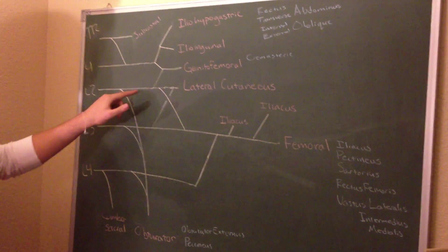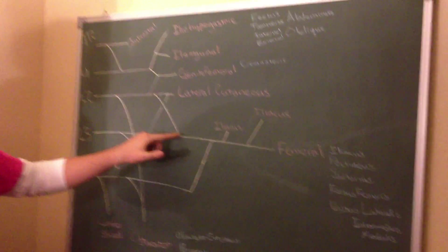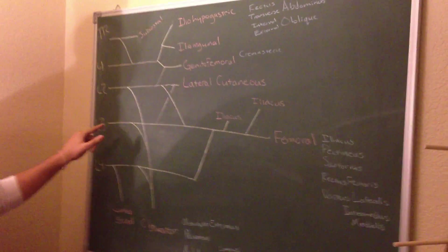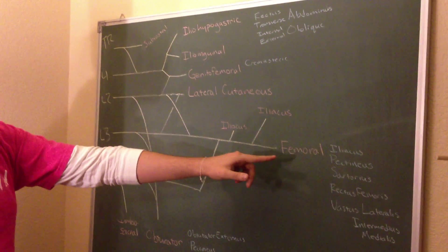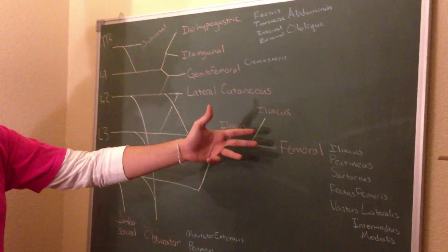Femoral nerve, we can follow L2 along this connecting track. So the femoral nerve, L3, and L4. So femoral dermatomal innervation is going to be L2, L3, L4.